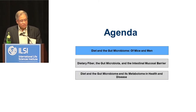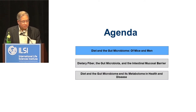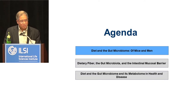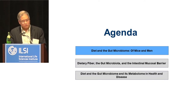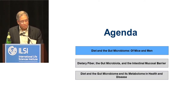These are the things I want to cover: diet and the gut microbiome — the differences and similarities between mice and men; dietary fiber, the gut microbiome, and the intestinal mucosal barrier; and diet and microbiome metabolism in health and disease.